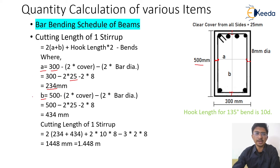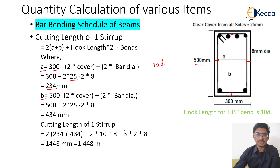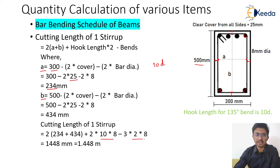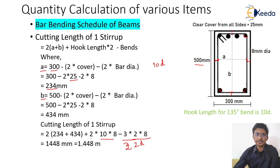Substituting into the formula: cutting length of one stirrup = 2 × (234 + 434) + 2 × 10d − 3 × 2d (for three 90-degree bends). This comes out to be 1.448 meters per stirrup.